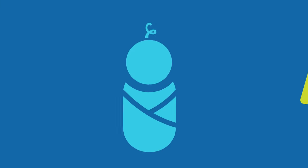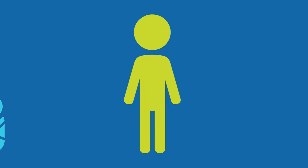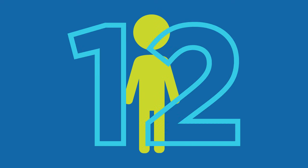Second only to infancy, a person's most intensive period of brain development typically happens at around age 12. Sixth grade.